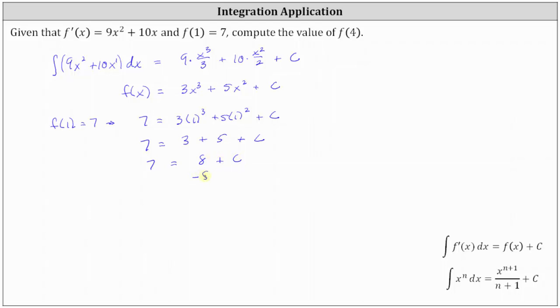To solve for c, we subtract 8 on both sides. Simplifying, we have c = -1.